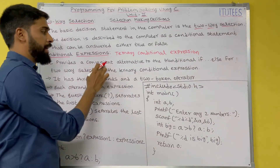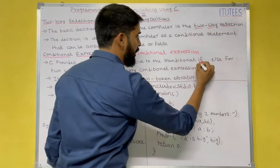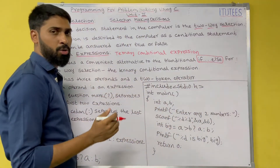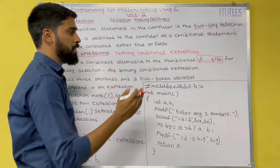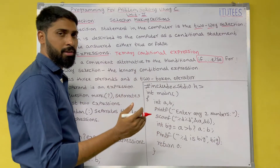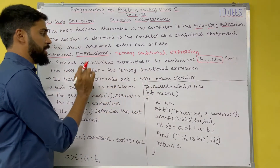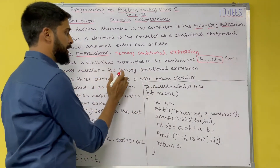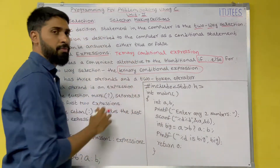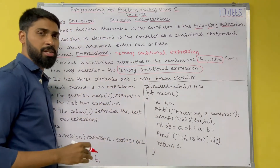C provides a convenient alternative to the traditional if-else. If-else is a two-way selection: if the condition is true, you execute the true block; otherwise you execute the else block. For two-way selection, you can use the ternary conditional expression instead of if-else.